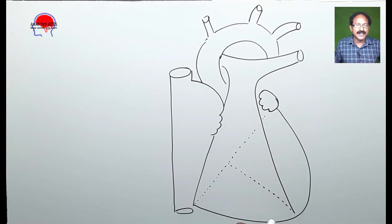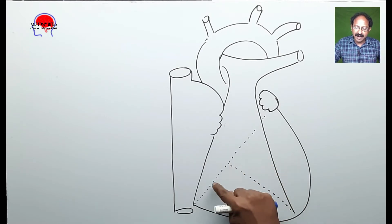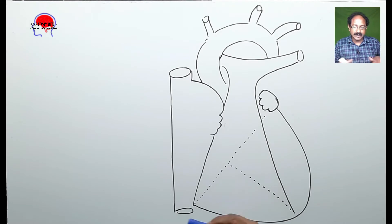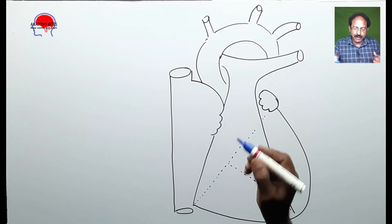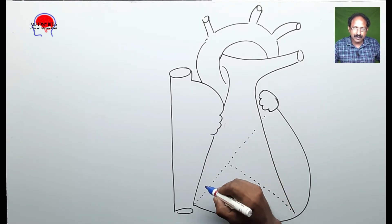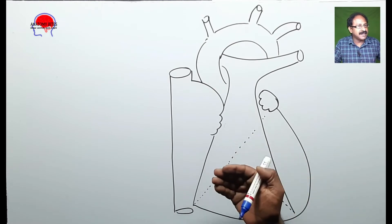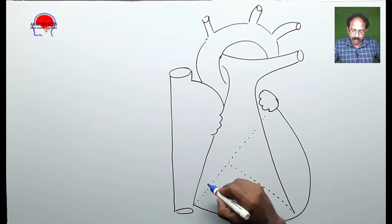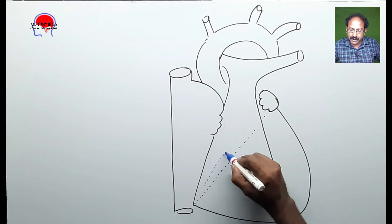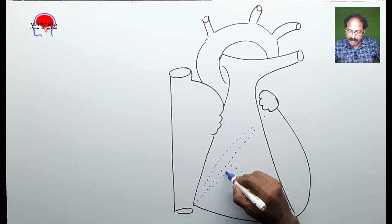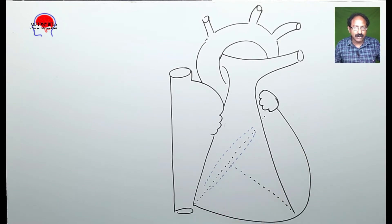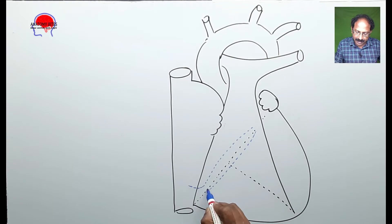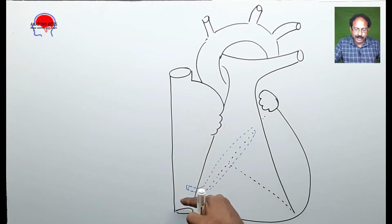The location of the coronary sinus is behind the heart in the posterior coronary sulcus. I will be drawing whatever is not seen from the anterior in dotted lines. The coronary sinus is a fusiform-shaped structure located in the posterior coronary sulcus, and its right end is opening into the right atrium.